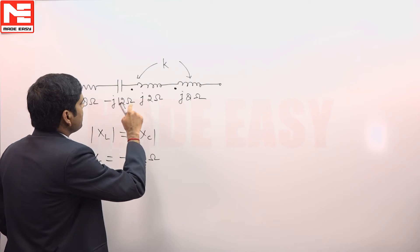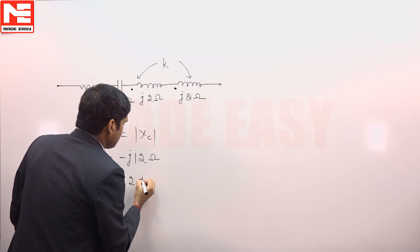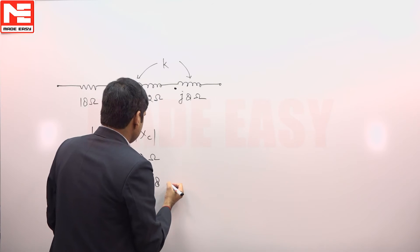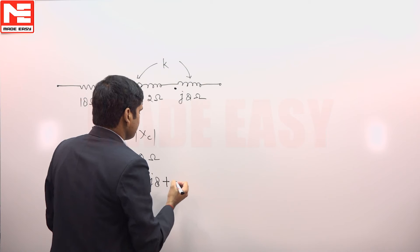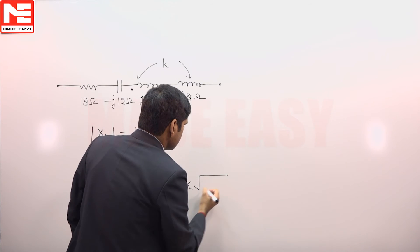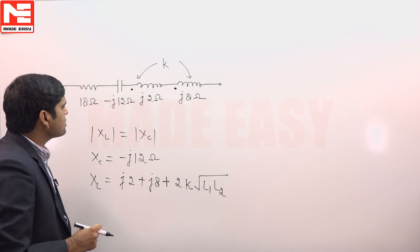So this will become j2 plus j8 plus 2k√(L1·L2). Since omega is not given, we can take omega equal to 1, and this as jωL.